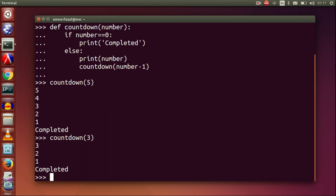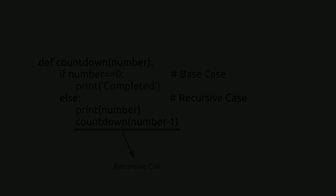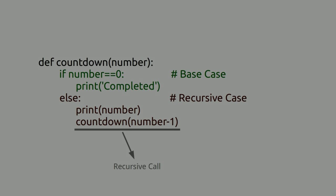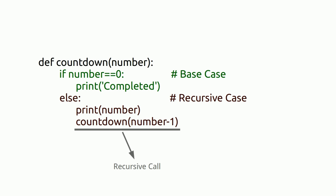This is a recursive function. We are calling the countdown function within the countdown function definition. The if part is the base case of this recursive function. The base case is for stopping the recursion. The else part is the recursive case. Countdown(number minus one) is the recursive call in the function. We are calling the countdown function by making the number one smaller.